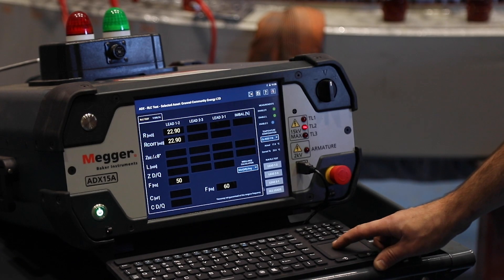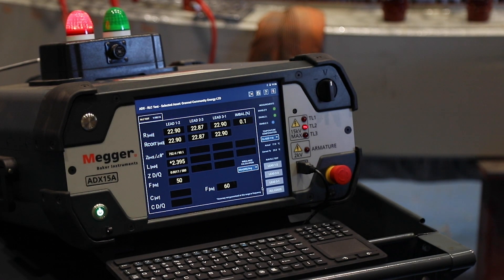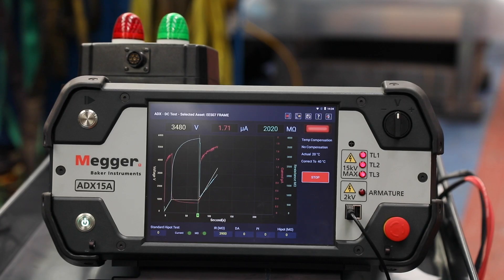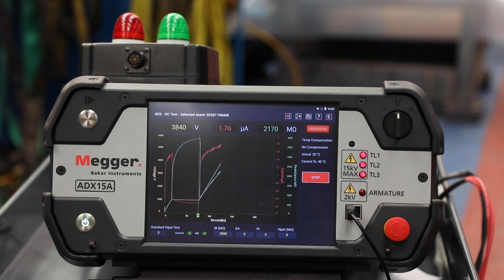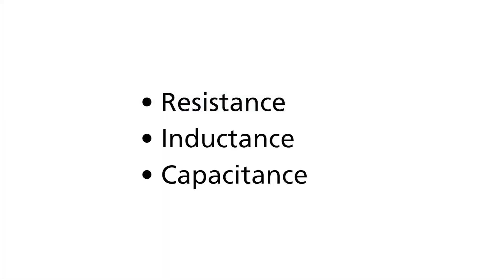Ground wall testing is done with a megohm test, but the megohm test alone is an incomplete test of ground wall insulation. To completely test the ground wall insulation, high voltage step, ramp, and high pot tests are also used. Baker Instruments static motor tests are non-destructive and follow IEEE and IEC motor testing standards. Additional tests available include resistance, inductance, and capacitance for verification of motor winding construction.